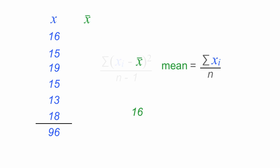And my instructions in my equation say, take the observation minus the mean. So I'll take 16 minus 16, 15 minus 16, 19 minus 16, and so on and so forth. Now my next step is I'm going to actually do that calculation. So 16 minus 16 is equal to 0.